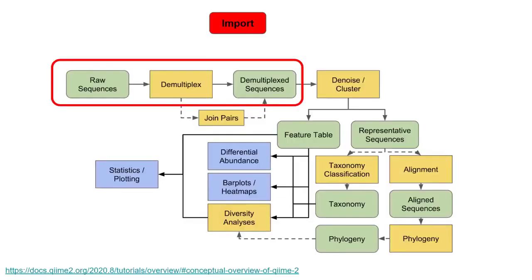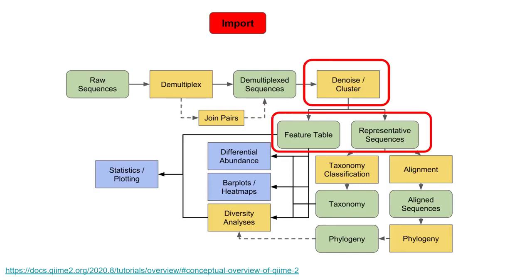In the last lecture video, we went over the process of importing your raw sequences into QIIME2 as well as demultiplexing them as needed. In this lecture, we're going to discuss the next step, which is the denoising and/or clustering process. This incorporates a series of actions ranging from quality control filtering, trimming, resolving ambiguous nucleotides, and dereplication of reads, ultimately ending up with a feature table as well as its corresponding representative sequence files.